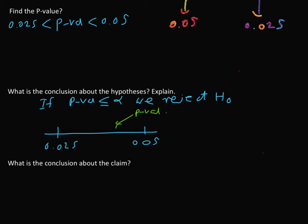That means here, so again we know our p-value is in between here, but alpha is 0.05. That means p-value is less than alpha 0.05. Therefore, we reject H0.